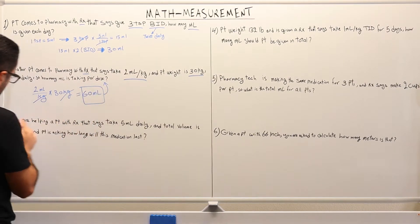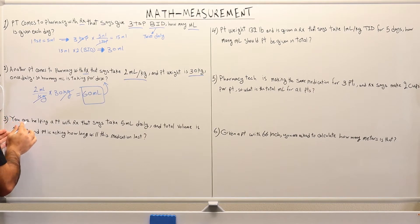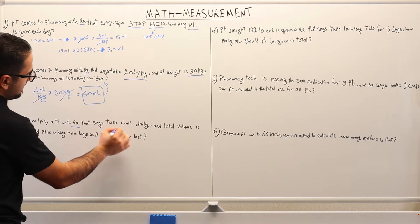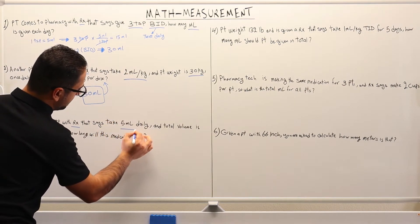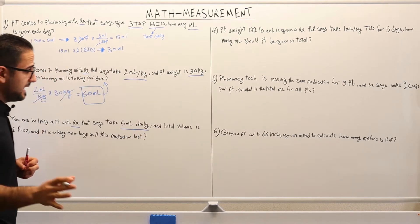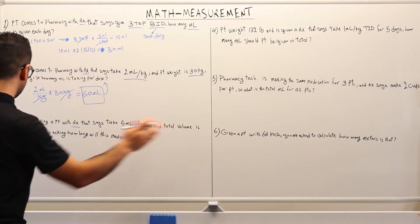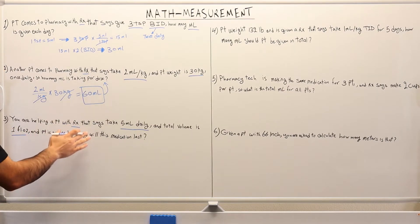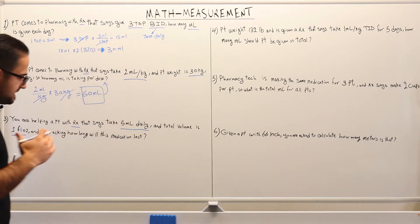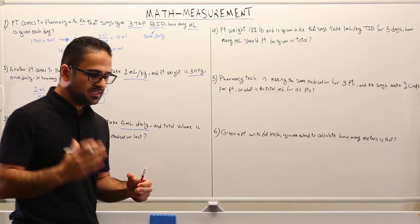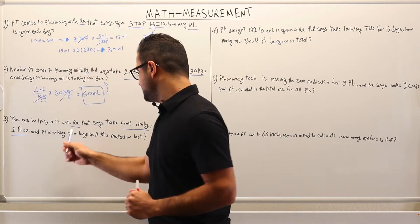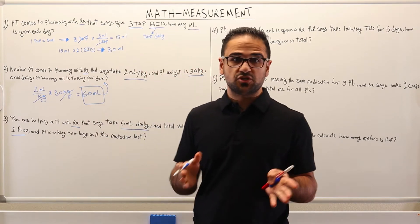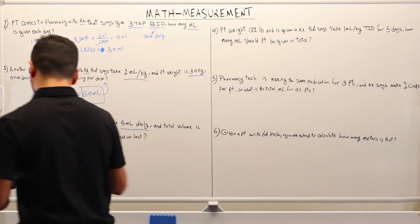Question number three. The question asks: a patient has a prescription that says take five milliliters daily. The total volume is one fluid ounce, and the patient is asking how long this medication will last. The patient is taking five milliliters every day and has been prescribed one fluid ounce.